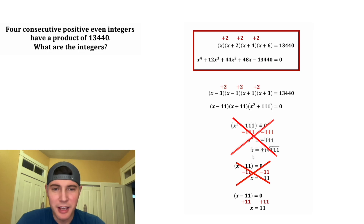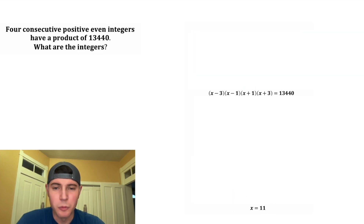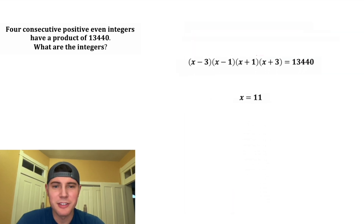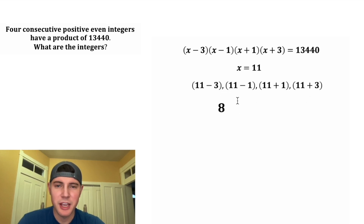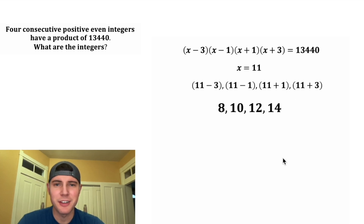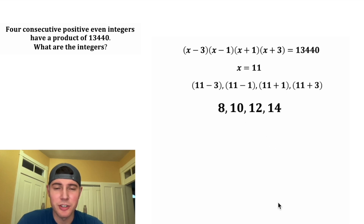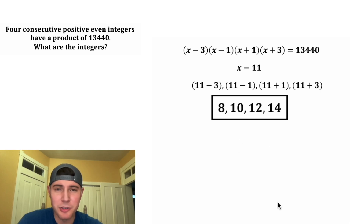For x minus 11 equals zero, adding 11 gives x equals 11. Plugging 11 into each expression: 11 minus 3 is 8, 11 minus 1 is 10, 11 plus 1 is 12, and 11 plus 3 is 14. Those are our four consecutive positive even integers.